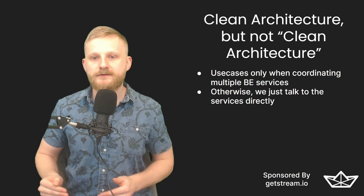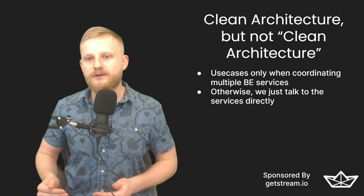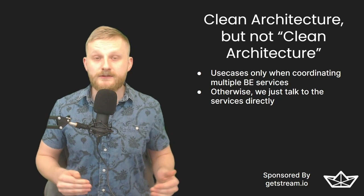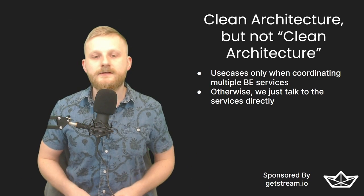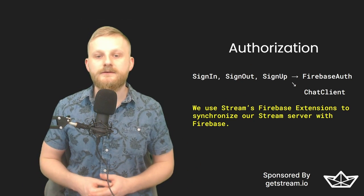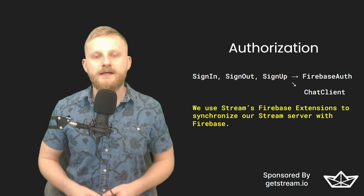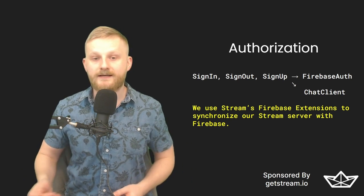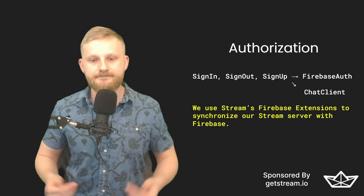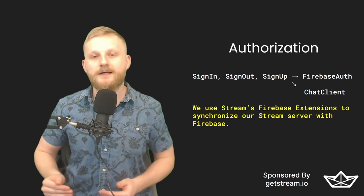I will also borrow a concept from clean architecture, but I don't follow clean architecture religiously. We will have use cases in a situation where multiple services must be coordinated to fulfill a single flow, like logging in. However, we're not going to have use cases that just make a single call to a single service function — that's just a pointless extra layer. Whether we're talking about clean architecture, solid principles, or whatever else, use these things only to the extent that they solve more problems than they create. For backend, we will use Firebase Auth for initial authorization of users.